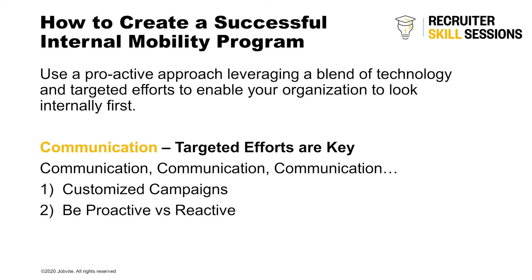The second element of creating a successful internal mobility program is around communication. We talked about using a proactive approach — it's a blend of technology and targeted efforts, and we want you to look internally first. You can really use a campaigning functionality to reach employees. As we discussed from the JobSeeker Nation report, people like to hear about opportunities from their manager, a peer, or finding it on their own. But again, 65% of people aren't even looking, so you need to make sure you're putting out relevant content to that internal talent audience.